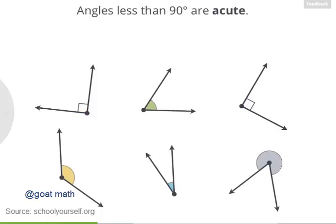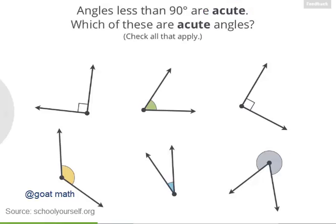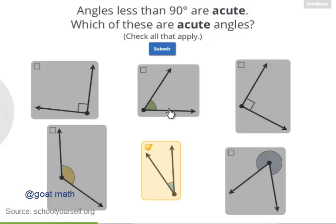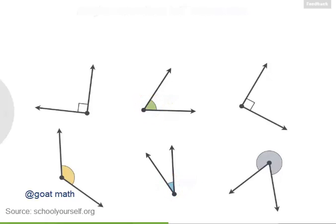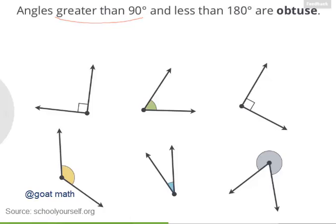If an angle has a measure less than 90 degrees, it's called an acute angle. So which of these angles here are acute? Precisely, these are the two acute angles. This angle is 60 degrees, and this one is 30 degrees. And if an angle is greater than 90 degrees but also less than 180 degrees, it's called an obtuse angle.